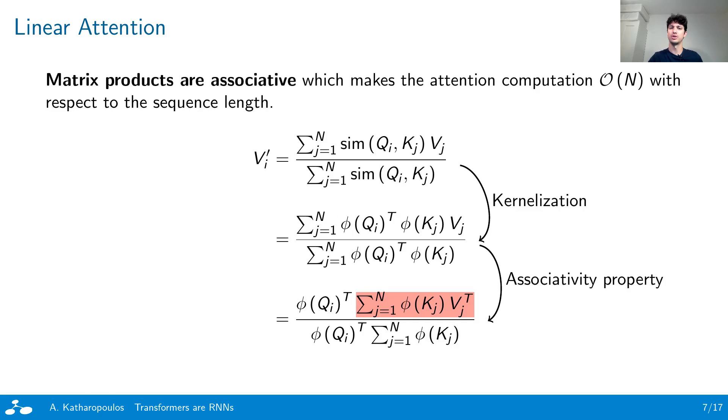Subsequently, using the associativity property of matrix multiplication, we can change the order of computation such that we don't multiply the queries with the keys first, but instead the keys with the values, as highlighted with red. This means that we never explicitly compute the attention matrix and we reduce the complexity with respect to the sequence length to linear, both in terms of memory and computation.